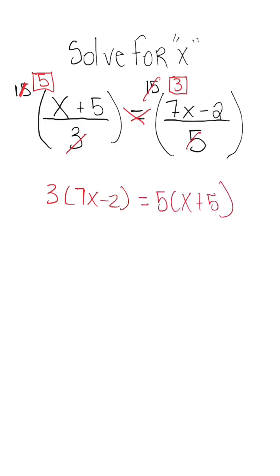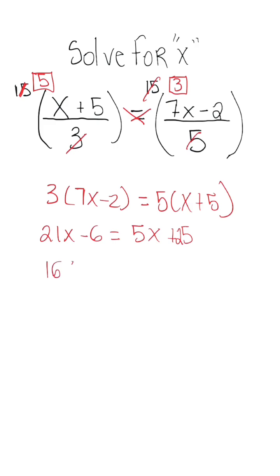This is why you need to know proportions and how to set them up. When we go through, 21x minus 6 is equal to 5x plus 25. Now when we simplify this and subtract 5x on both sides, what we're going to have is 16x minus 6 is equal to 25.